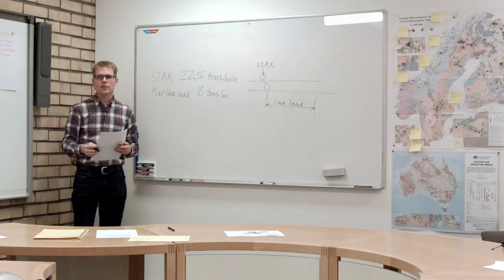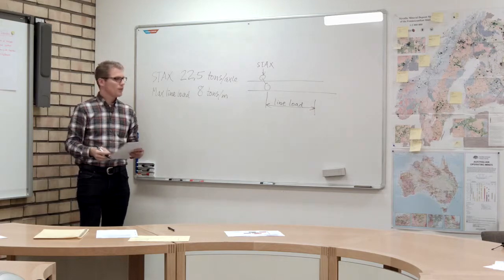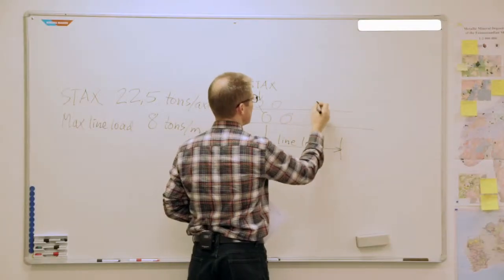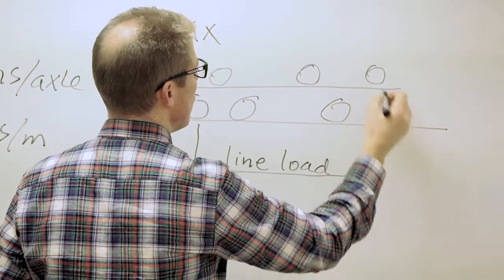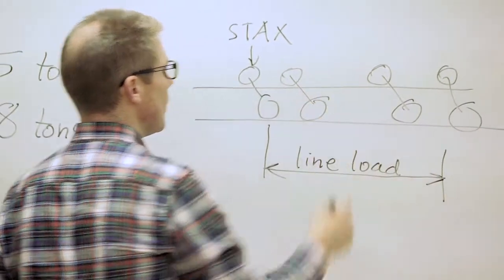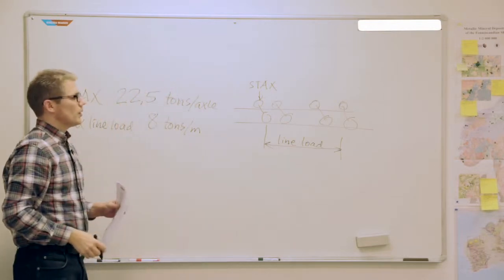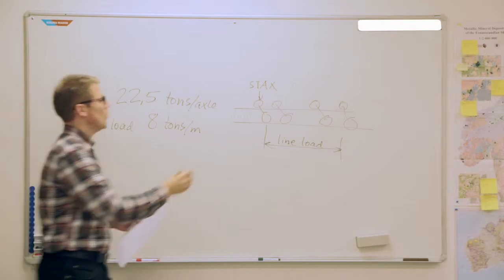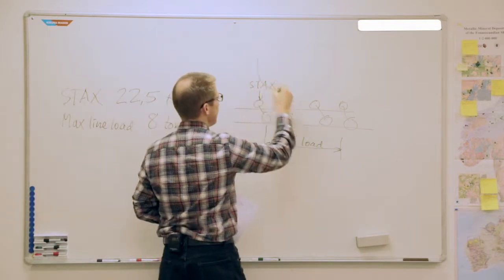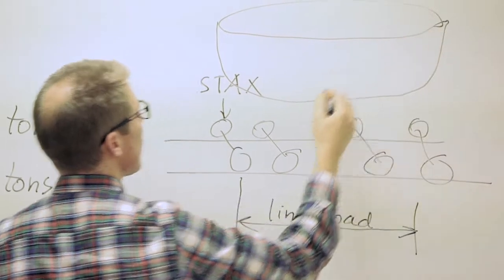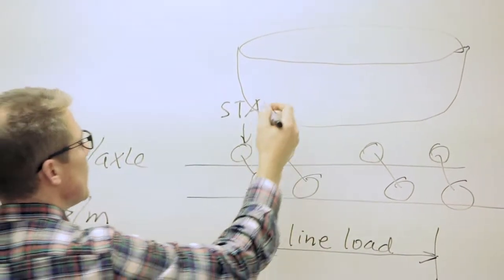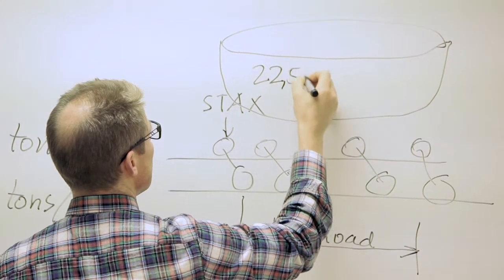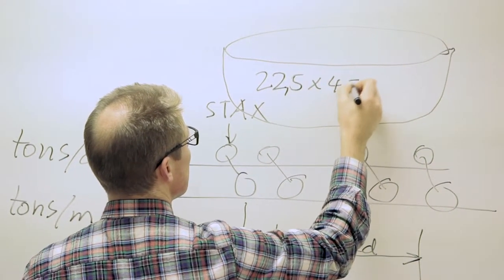These two figures determine a lot about the limitations for the wagon. With four axles per wagon—one, two, three, four—we can count how heavy the whole wagon can be. It becomes 22.5 times 4 is 90 tons.